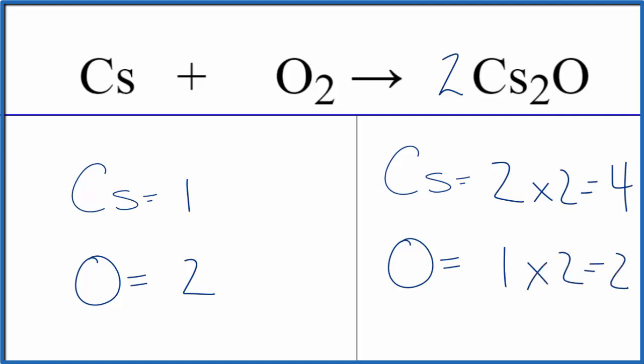The oxygens are balanced. Now if we need four cesium atoms over here we put a four here. One times four equals four, doesn't change anything else, and we're done. This equation is balanced.